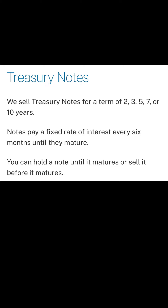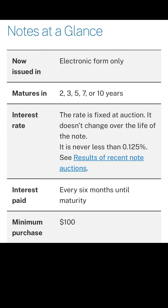Another fixed income I like is treasury notes. These are shorter terms — you can go from two to ten years, and the notes pay a fixed rate of interest every six months until they mature. The ones I like are between the two and five year; the rate is fixed at auction and doesn't change over the life of the note. They will never yield less than 0.125%, so it's a relatively safe investment — it's going to make something even if it doesn't make very much. Currently, with the market taking a hit and people rolling into yields, these are at once-in-a-generation type percentages, making it an extremely good opportunity to get into some of these fixed incomes right now.